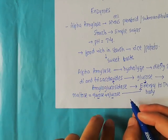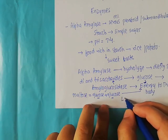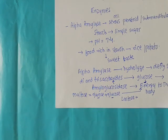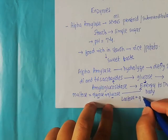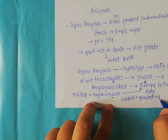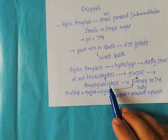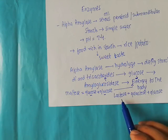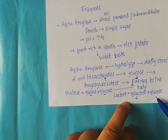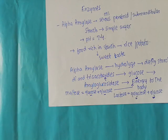Another important example is lactose. Lactose is also a disaccharide made up of galactose and glucose. When amyloglucosidase acts on lactose, it is converted into the monosaccharides galactose and glucose, which can be utilized by the body for the production of energy.